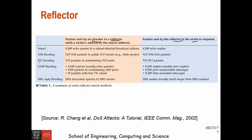The other type is RST flooding. The attacker sends a TCP packet to a non-listening TCP port on the reflector, so the reflector will reply to the victim with a RST packet.